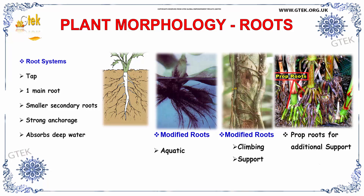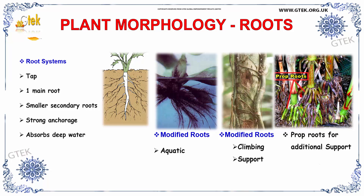Now we are going to see about the root system. The tap root system has a main root and smaller secondary roots and it has strong anchorage. It absorbs deep water. You can see the tap root and main root, and the smaller secondary roots. Here the modified roots are depicted — it is nothing but aquatic roots. And this root is used for climbing surfaces. Here you can see the prop roots, which are used for additional support to grip the sand.